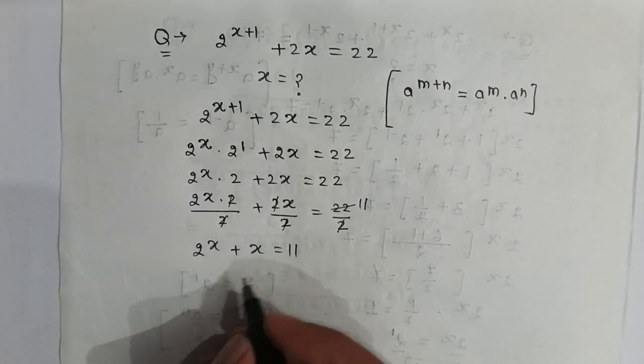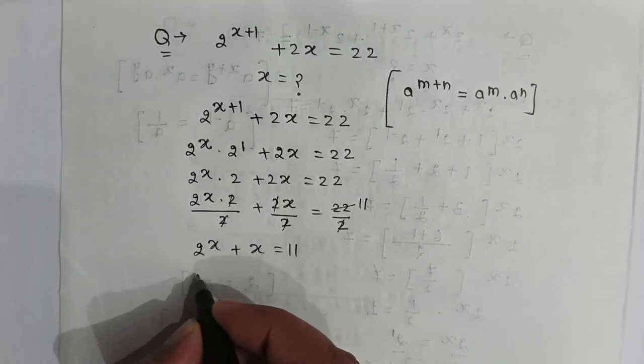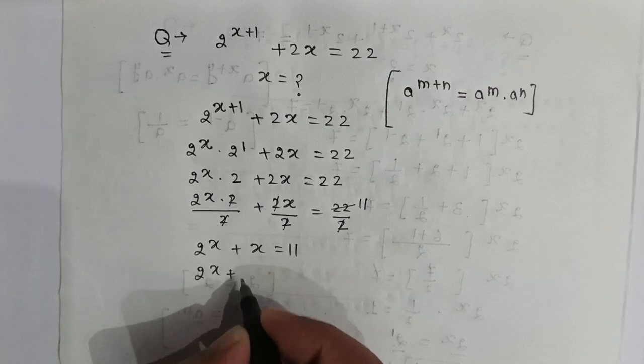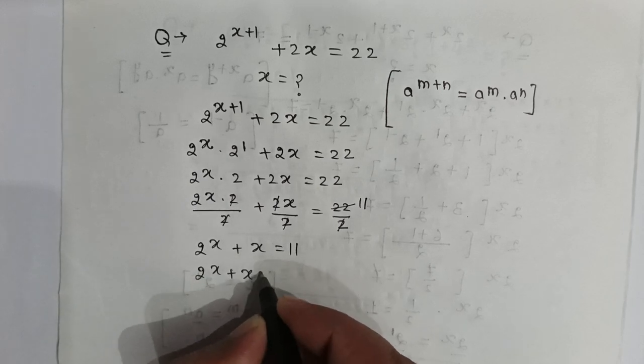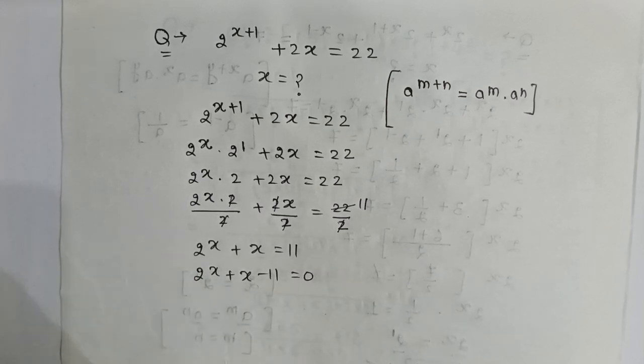So rearranging, we get 2 to the power x plus x minus 11 is equal to 0.